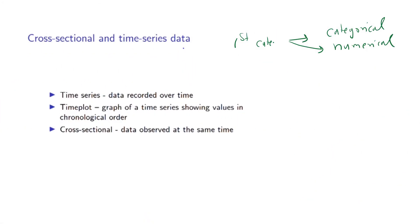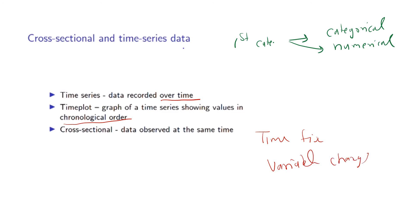Cross-sectional and time series data: time series data is recorded over time, and a time plot is a graph of a time series showing values in chronological order. Cross-sectional data is observed at the same point in time — time is fixed and the variable changes.